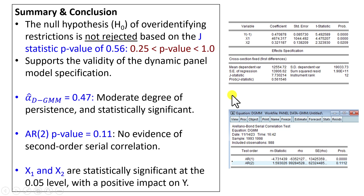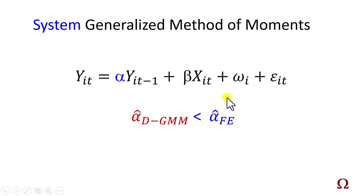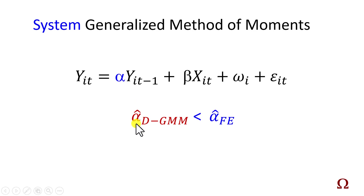This concludes the presentation. Next up will be an example of System GMM, which is the case where the coefficient of the lag-dependent variable with Difference GMM estimation is less than that with fixed-effects estimation.